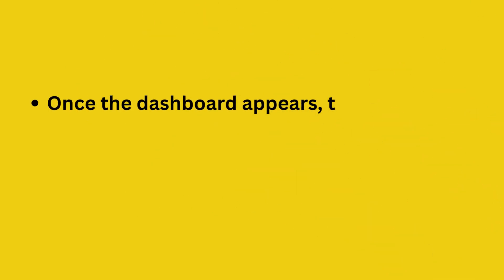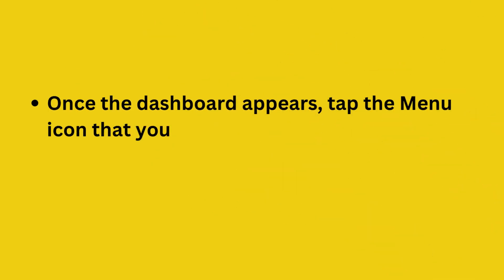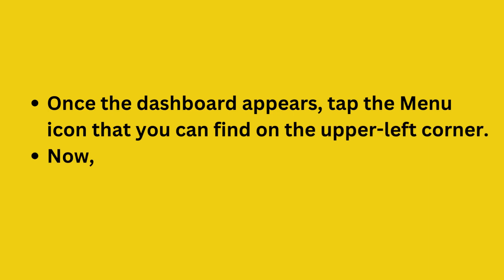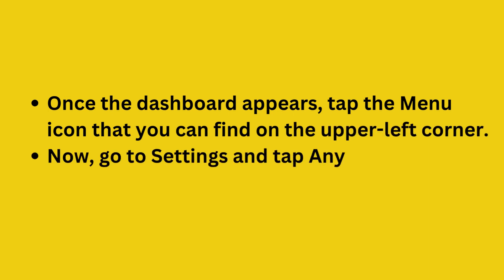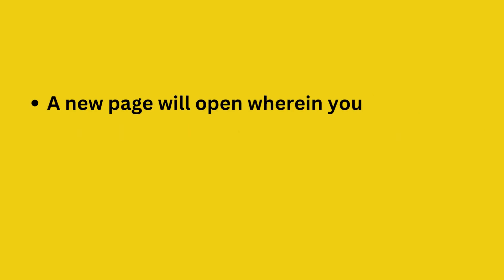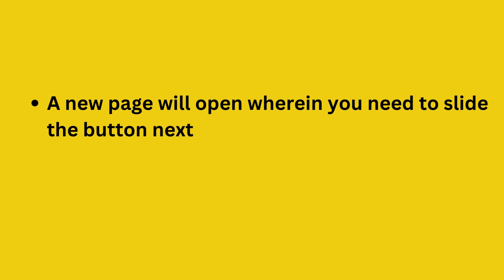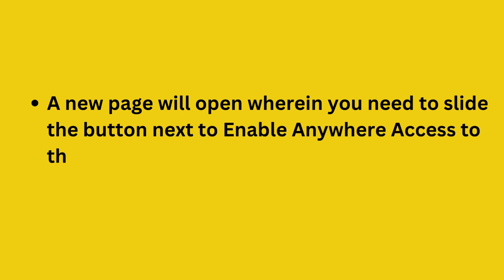Once the dashboard appears, tap the menu icon that you can find on the upper left corner. Now go to settings and tap Anywhere Access. A new page will open wherein you need to slide the button next to enable Anywhere Access to the On position.